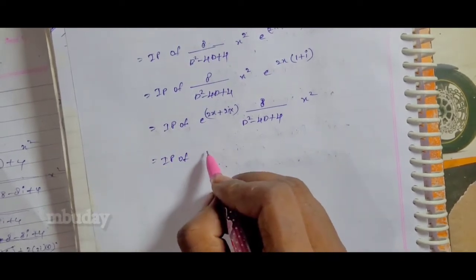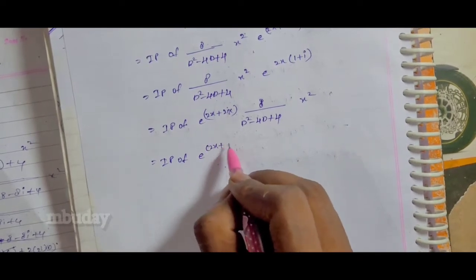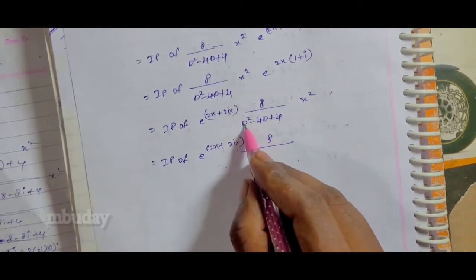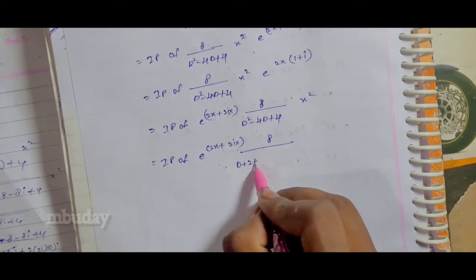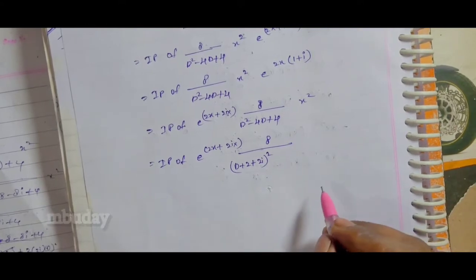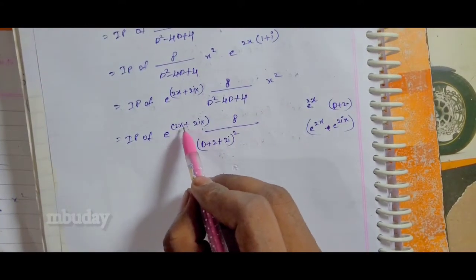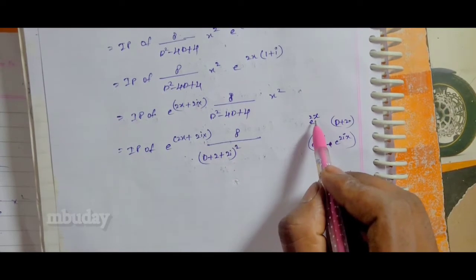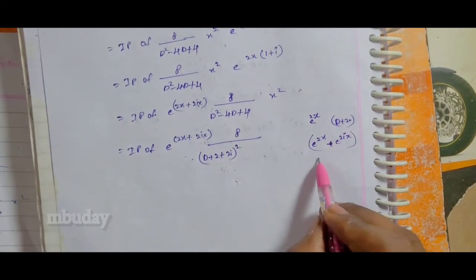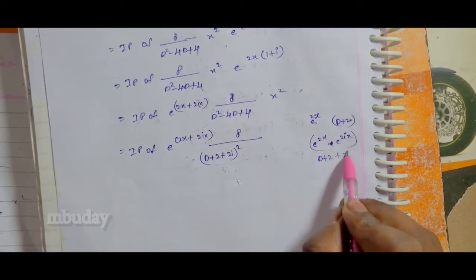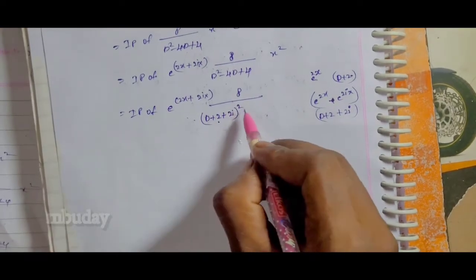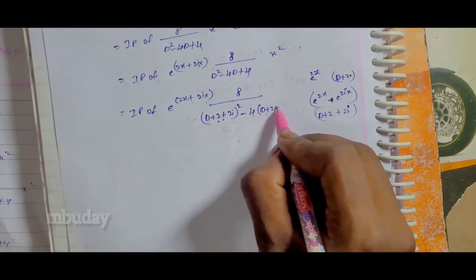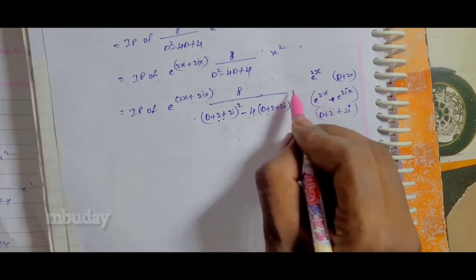Applying the exponential shift theorem, we substitute D → (D + 2 + 2i) in f(D). We substitute into (D + 2 + 2i)² - 4(D + 2 + 2i) + 4, operating on x².